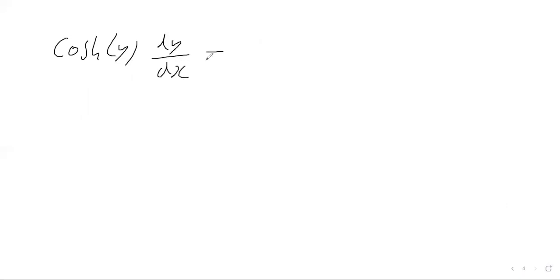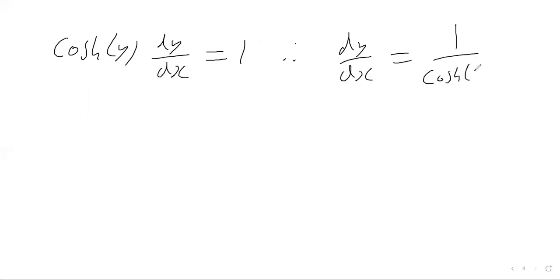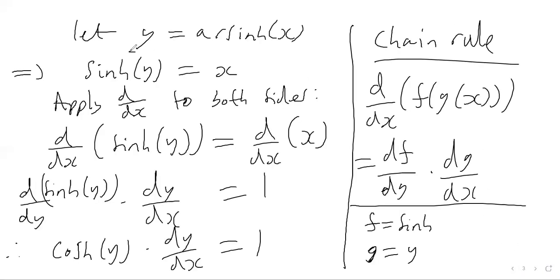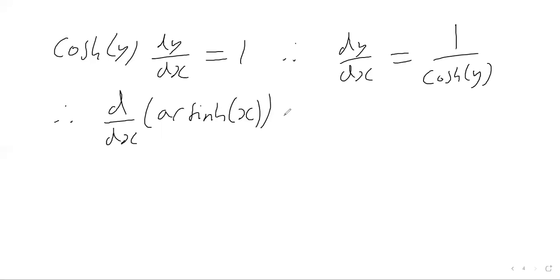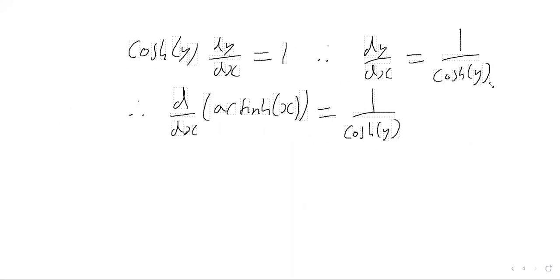So we have cosh(y) · dy/dx = 1, which means dy/dx = 1 / cosh(y). Since y = arsinh(x), we can write: d/dx of arsinh(x) = 1 / cosh(y). However, we have a problem - the answer is expressed in terms of y, not x, so we need to resolve this.